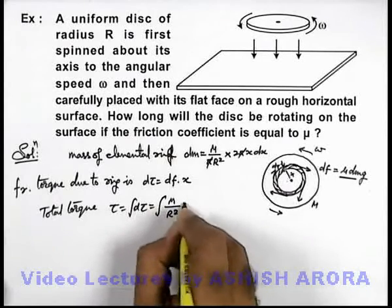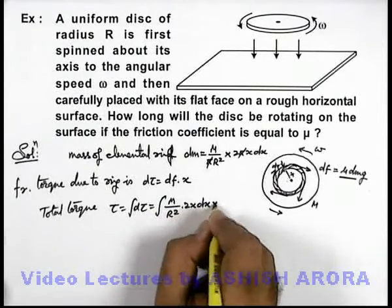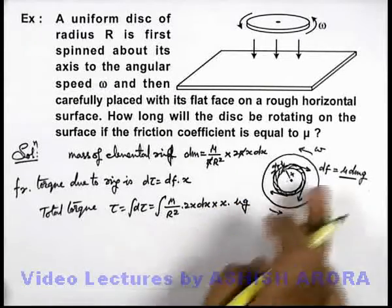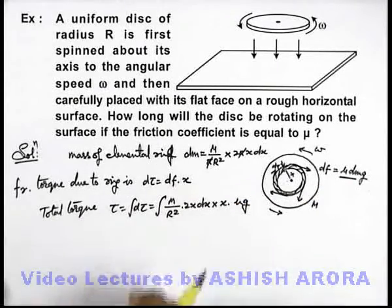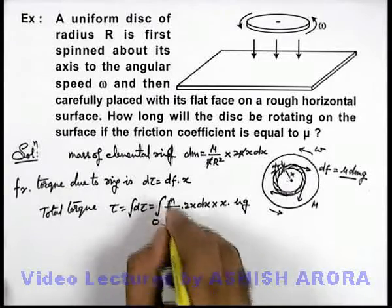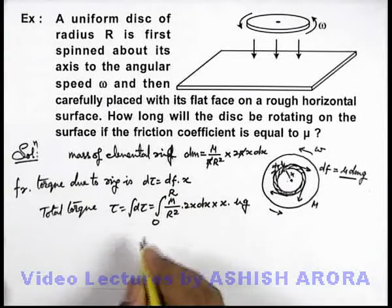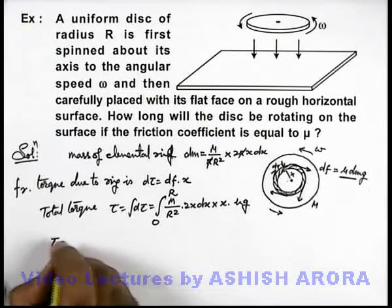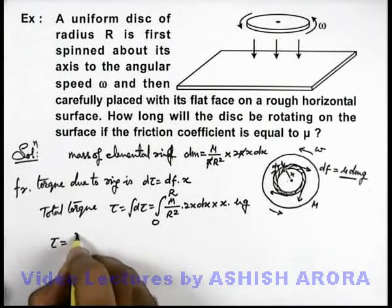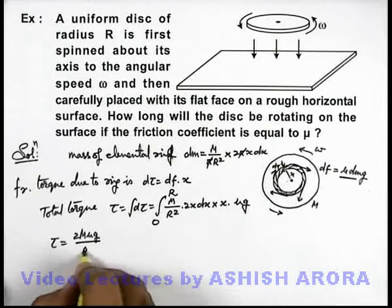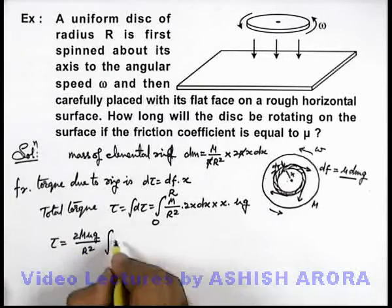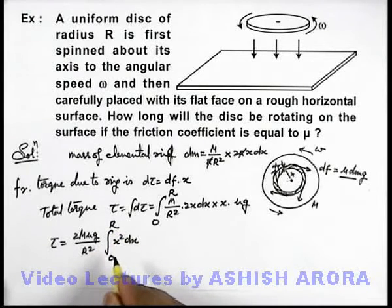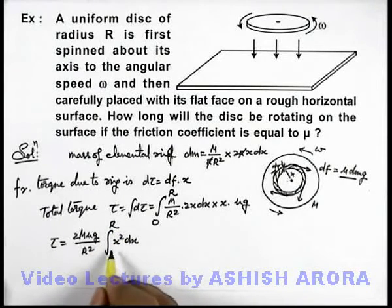That is m by R² into 2x dx multiplied by this x into μg. I'll substitute the whole df as well as this x and I'll integrate it from zero to R. Now in this situation, carefully I just take all constants out of the sign of integration, so this will be 2m μg by R². It is integration of x² dx from zero to R.